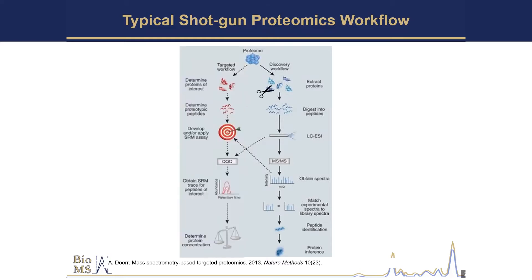That would be a discovery workflow where we don't know what we're looking for — we just say, what can we see? Then sometimes we can infer back and say, I found HNF4 alpha, it's a really interesting protein, I want to target that. A lot of times we do a discovery, find proteins that are changing, and then go back and specifically quantitate that protein.